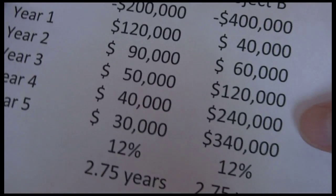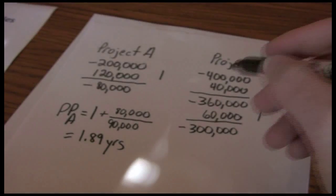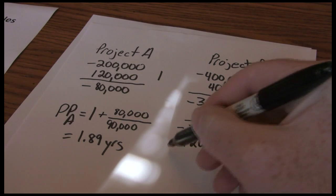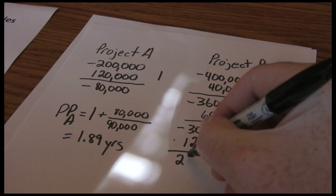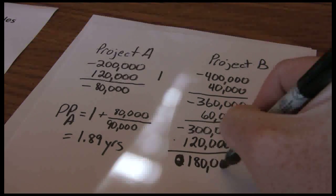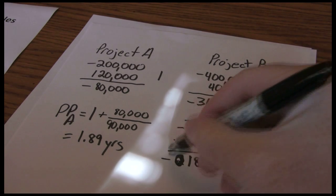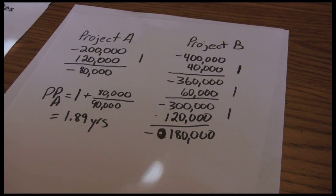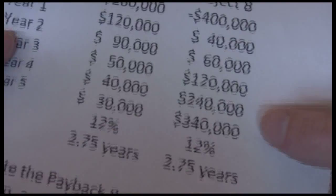We go to year three. In year three, we're going to get $120,000. So now we add that in. And that tells us we still have $180,000 to go. So we count again. Our count is now up to three. We have $180,000 yet to pay back.